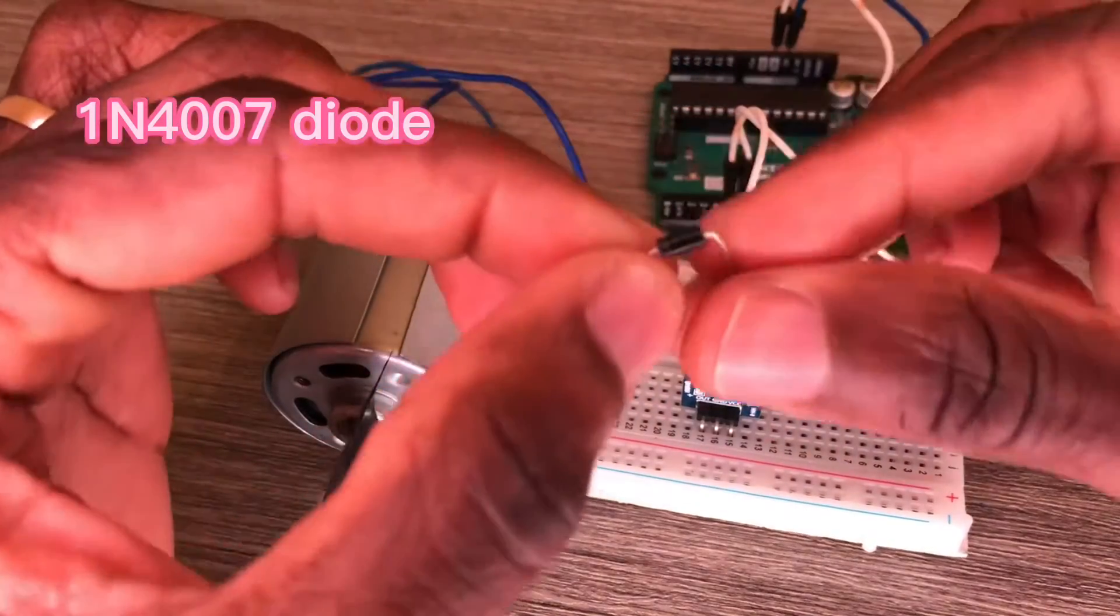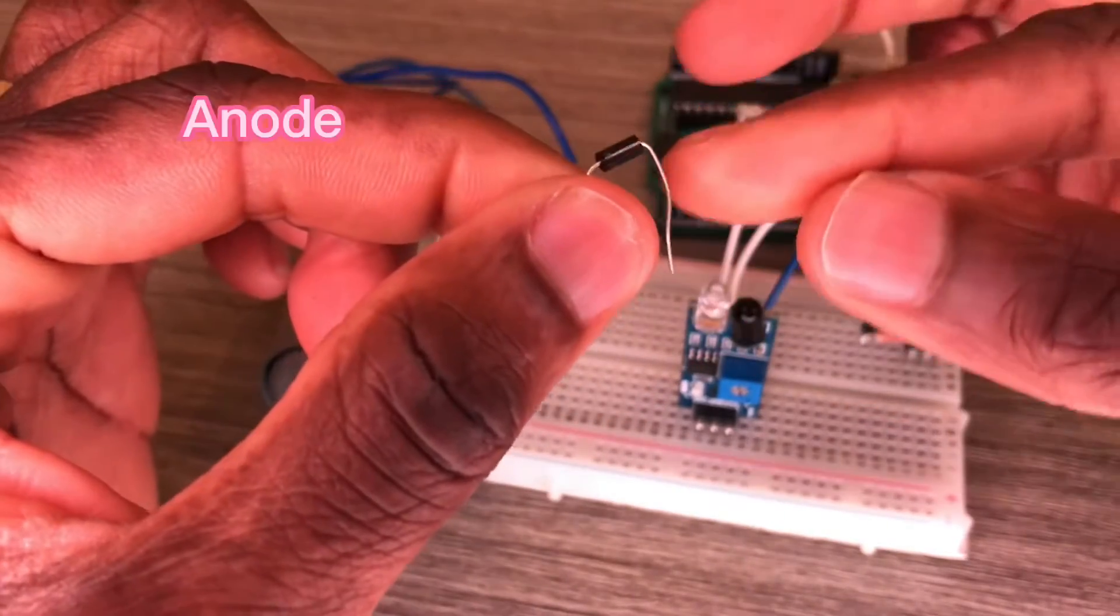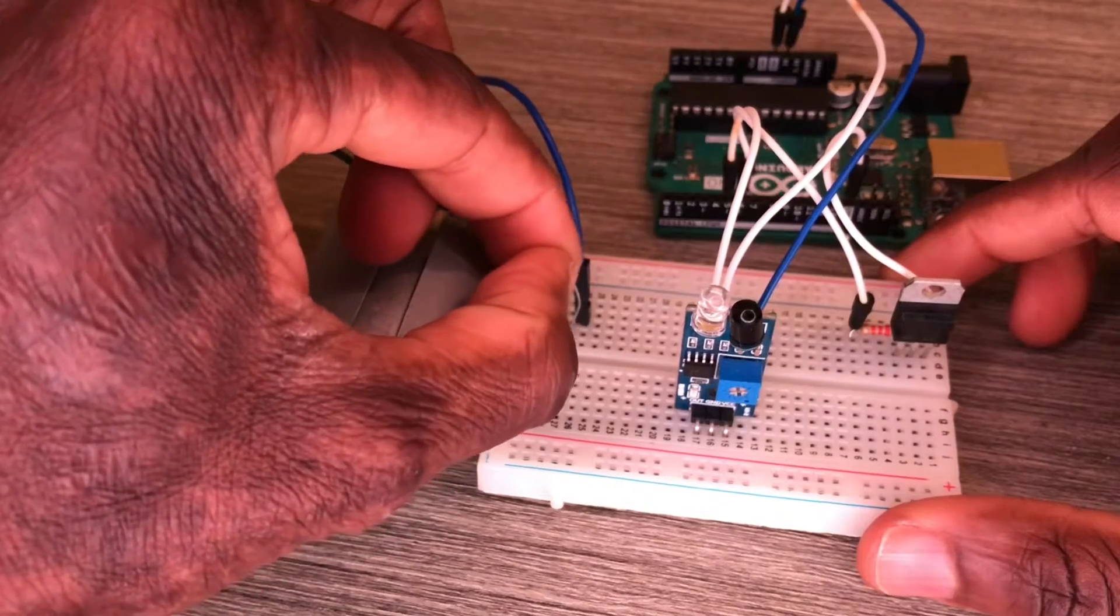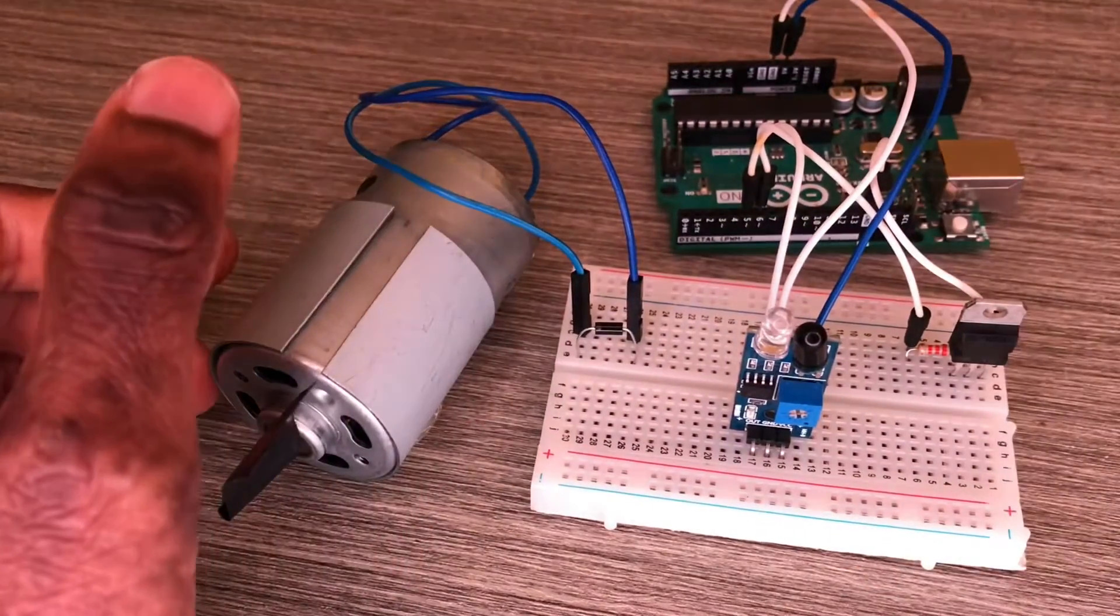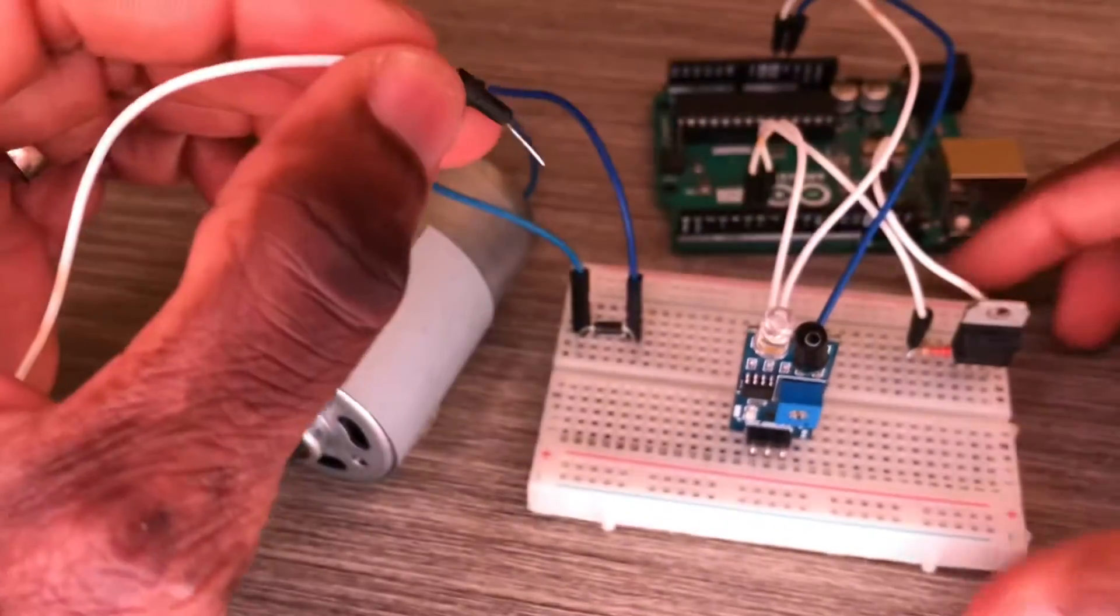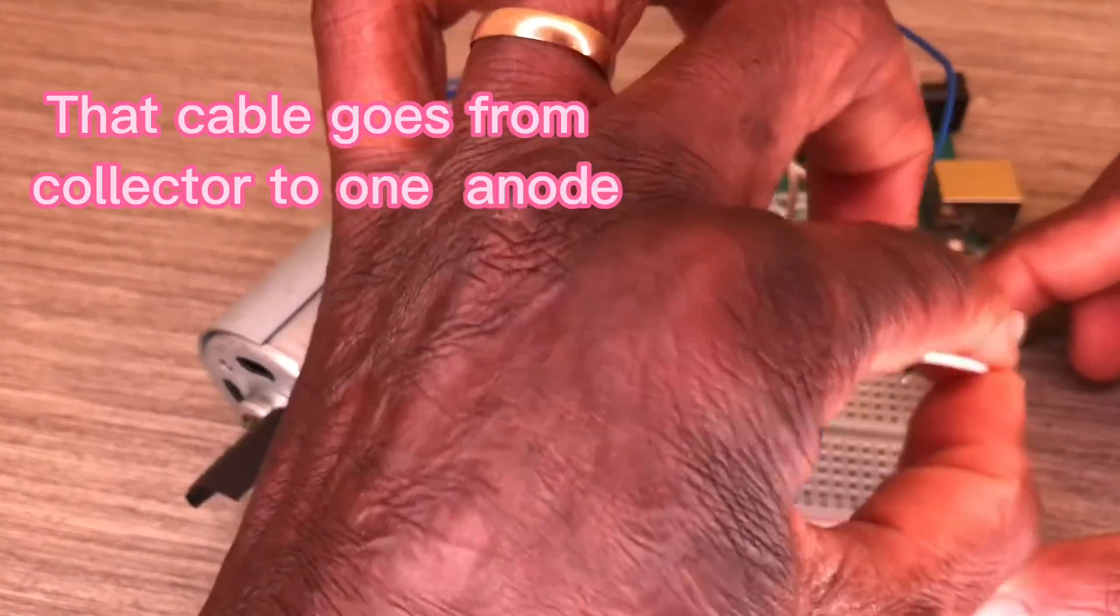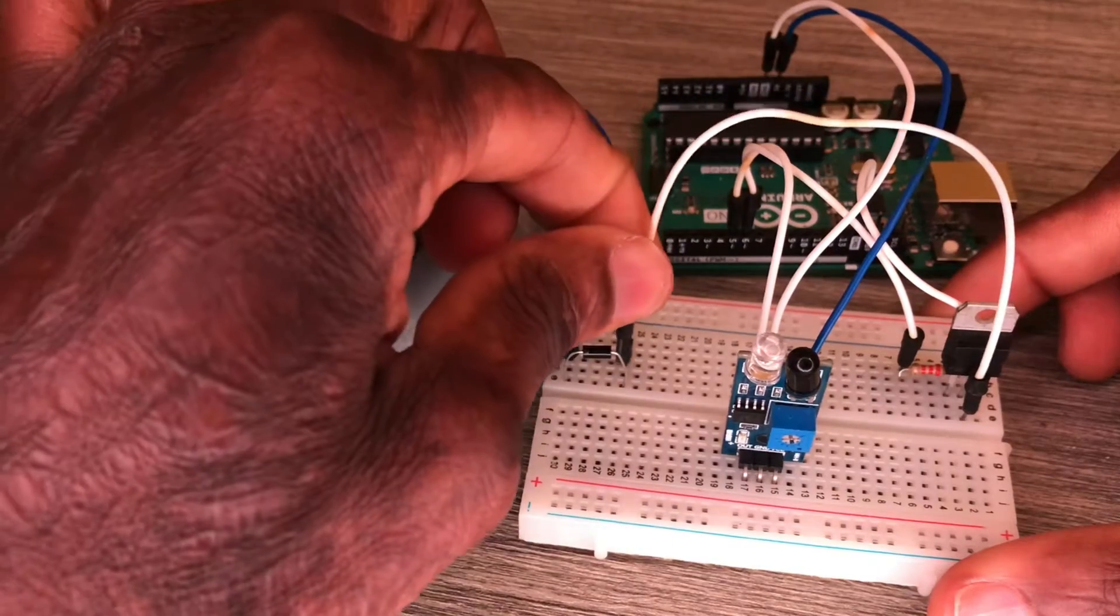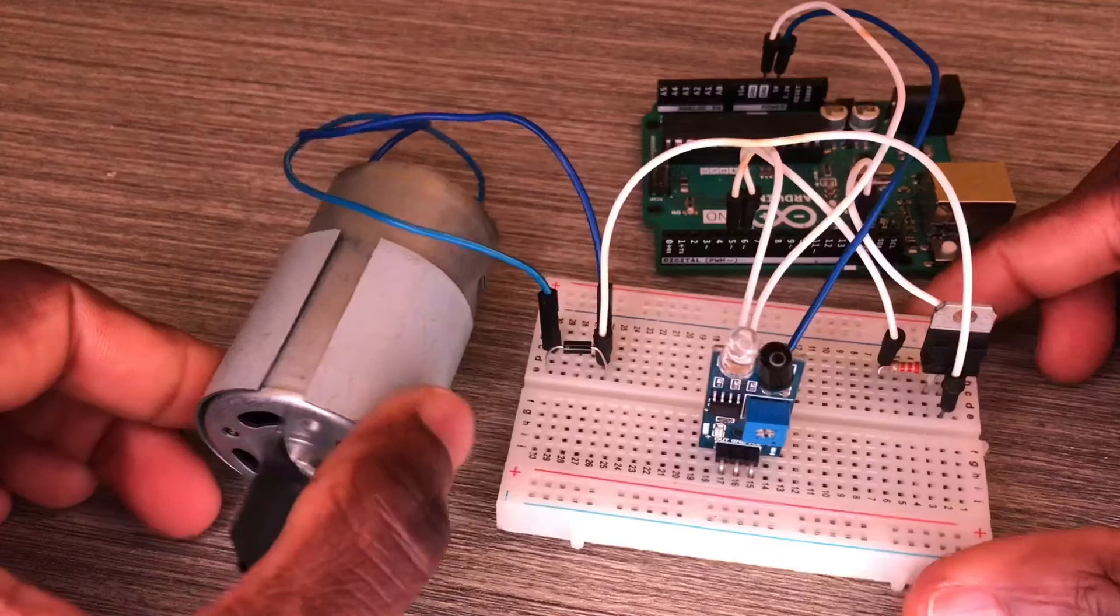We need a diode to protect the transistor because the motor is an inductive load. That cable is the collector, going to the anode of the diode.